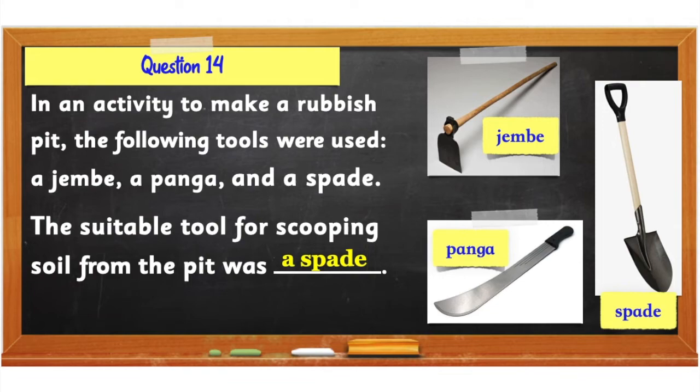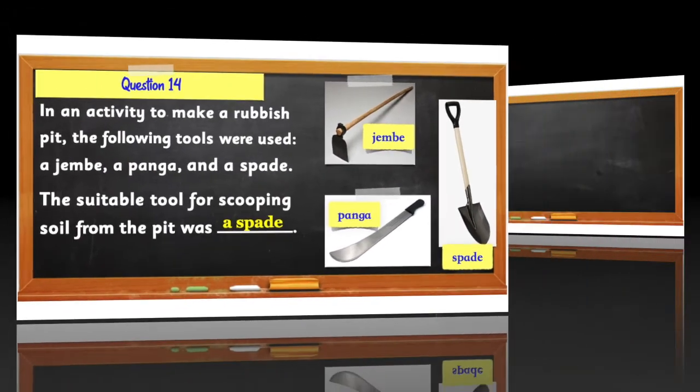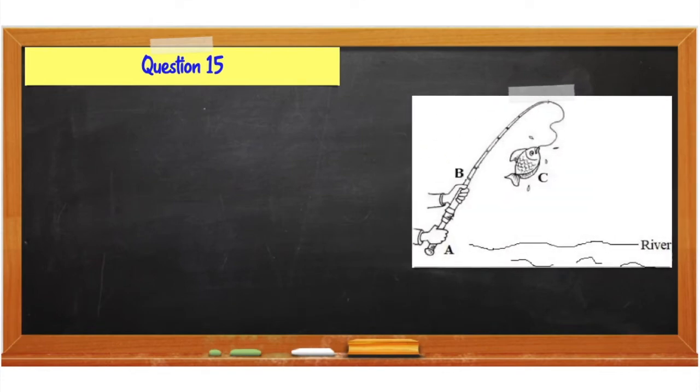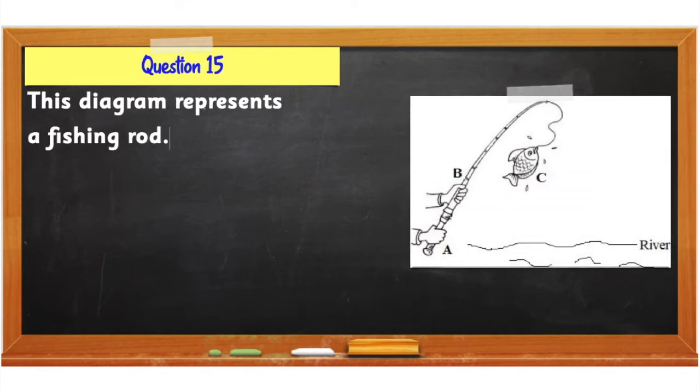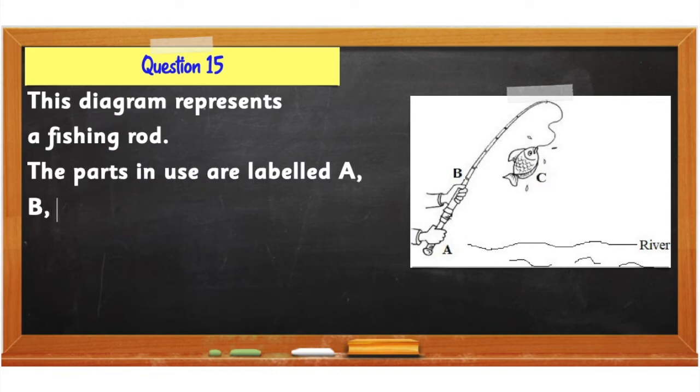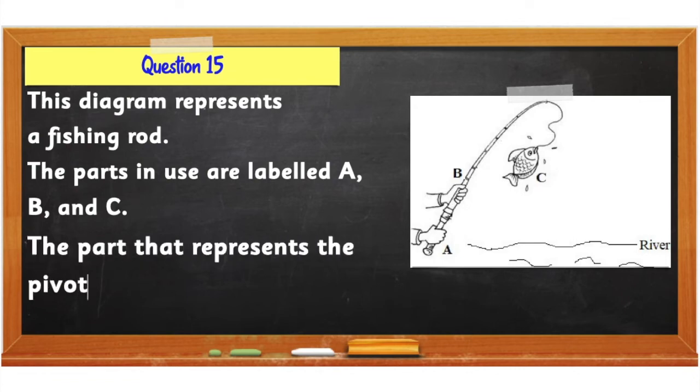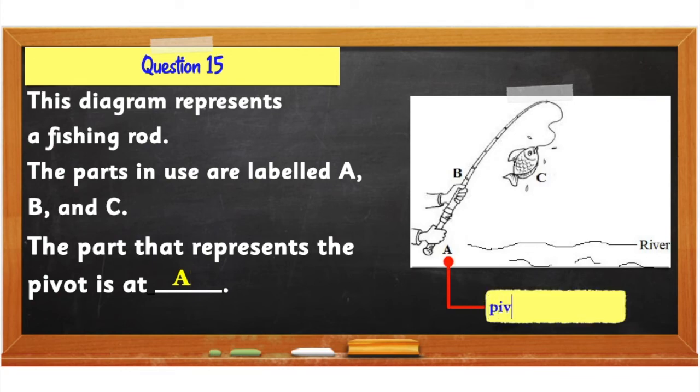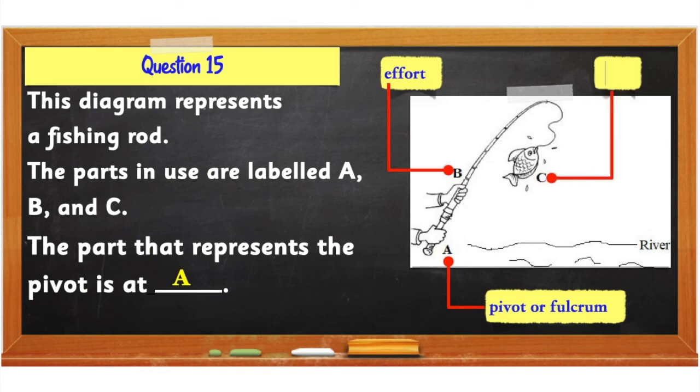Question number 15: This diagram represents a fishing rod. The parts in use are labeled A, B, and C. Which part represents the pivot? The part that represents the pivot is labeled A. The pivot is also known as the fulcrum. A fishing rod is a simple machine. It is an example of a lever. The fish is the load. The effort is applied at the point labeled B.